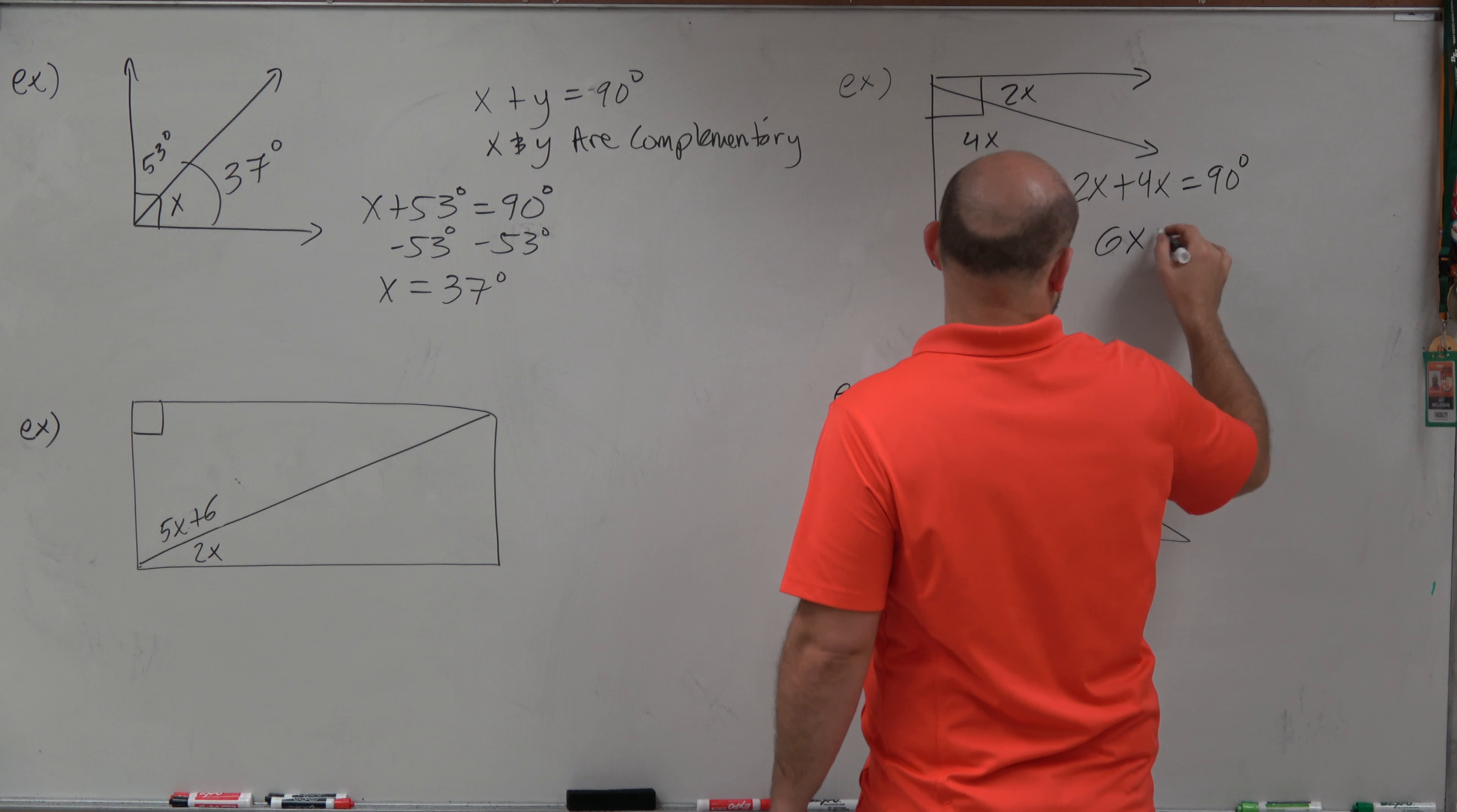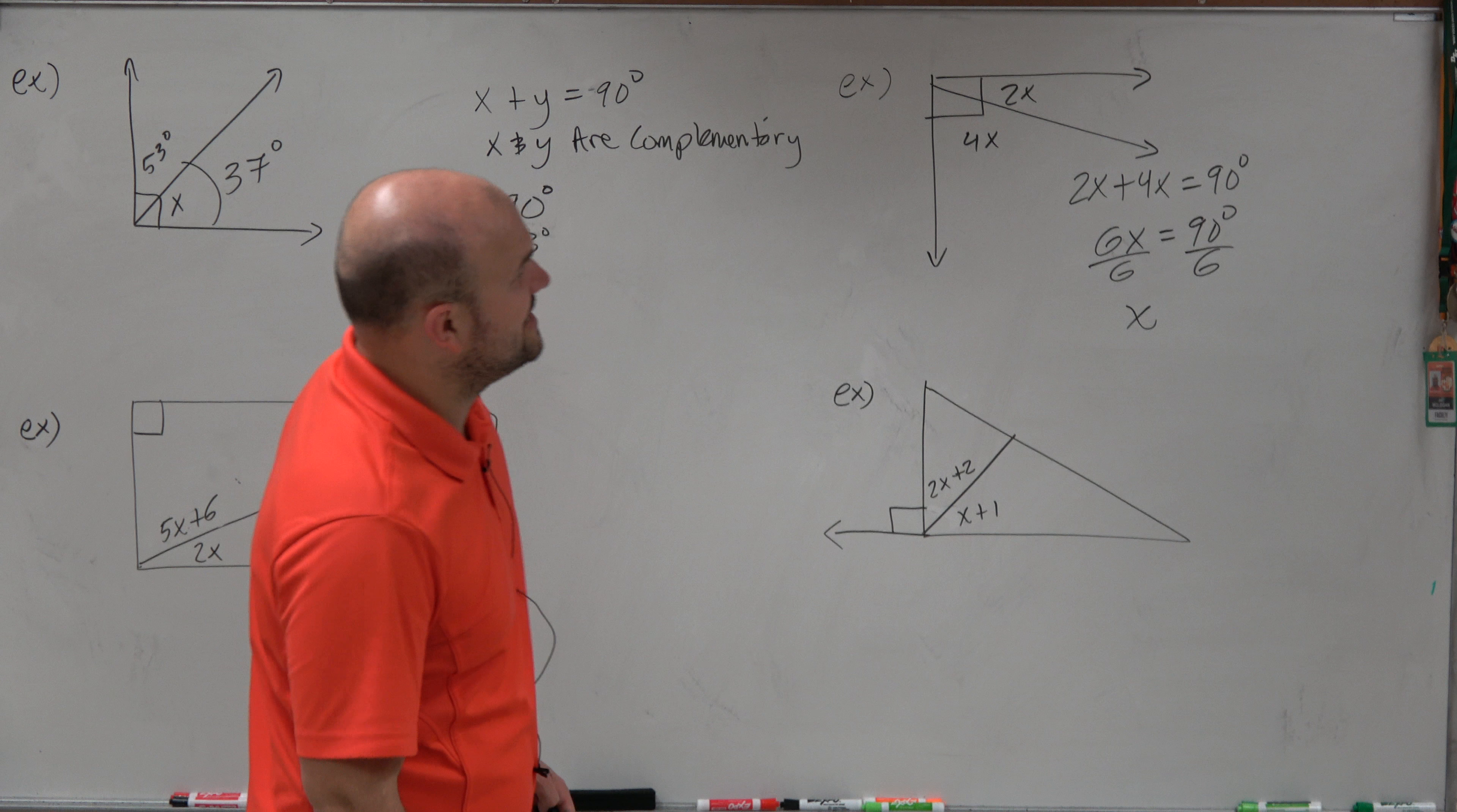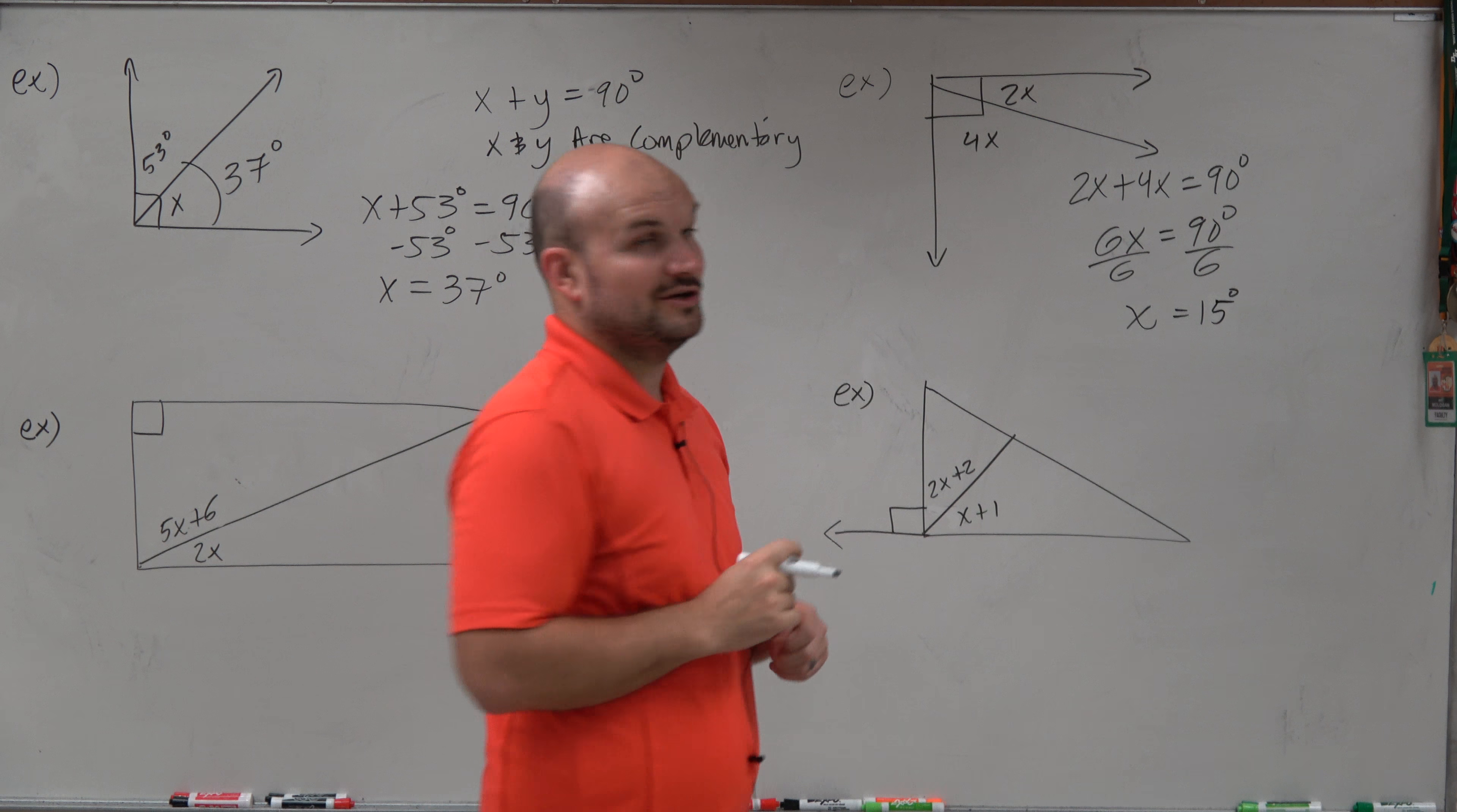Therefore, I get 6x equals 90 degrees. Divide by 6, divide by 6. And here, I am going to get x equals 15 degrees.